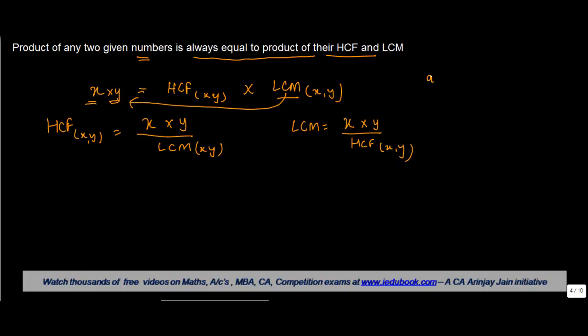It's just like you know you have A times B equals X times Y. So if you have to find out X, X can be written as A times B divided by Y, and Y can be written as A times B divided by X.